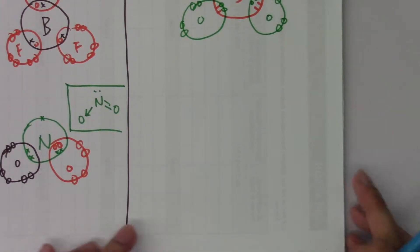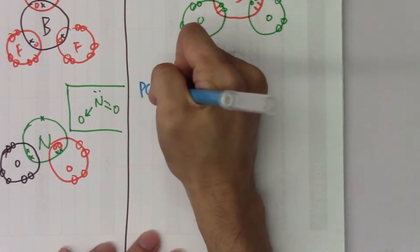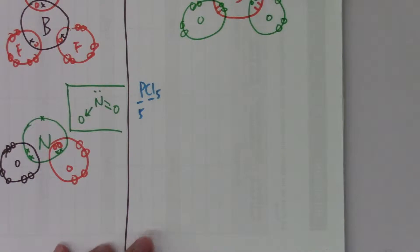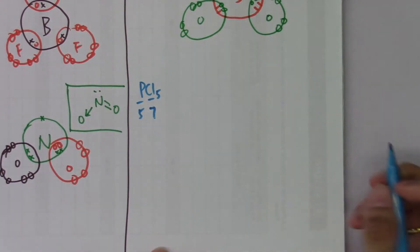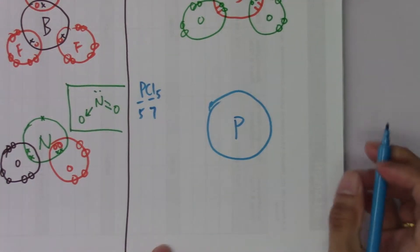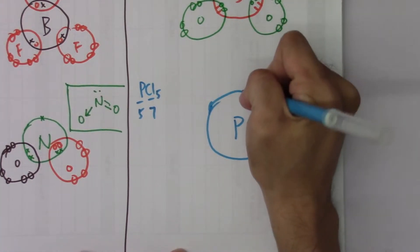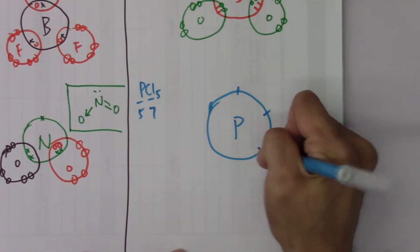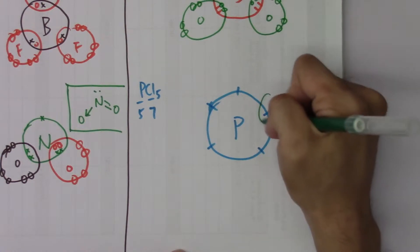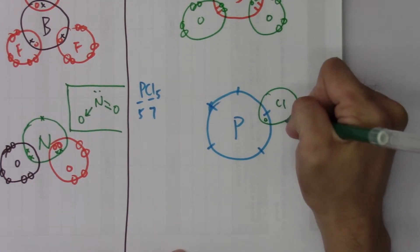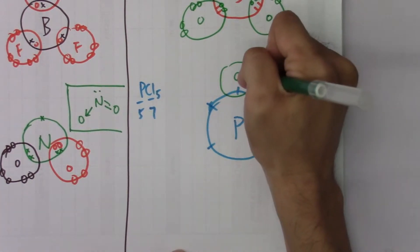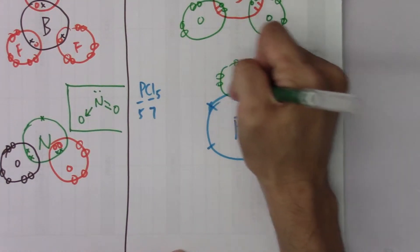Another typical example of expanded octet is PCl5. Phosphorus has five electrons on its atom shell, while chlorine has seven. Phosphorus, again, will expand its octet — sharing five electrons with the five nearby chlorine atoms, and each chlorine shares one electron with phosphorus in return.